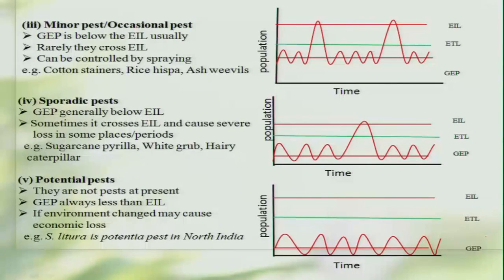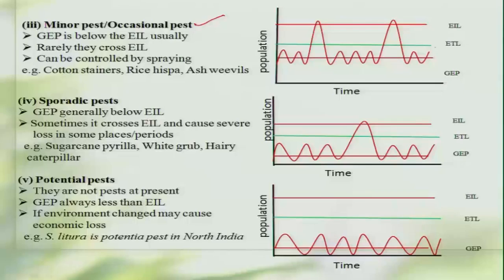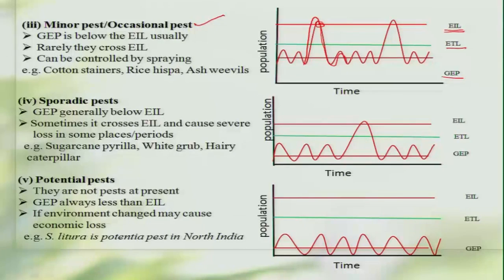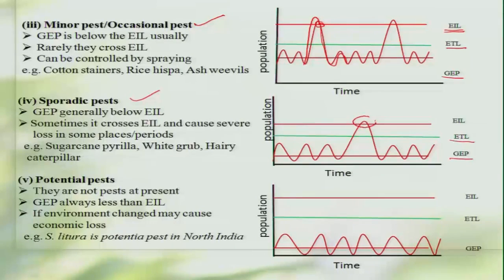The third type is the minor or occasional pest. Here, the GEP is much lower than the economic threshold level, but occasionally the population will suddenly increase and go beyond the economic injury level, requiring intervention to bring it back down. Similarly, with sporadic pests, the GEP is also much lower than the economic threshold level, but unexpectedly the population increases beyond the economic injury level and causes economic damage.